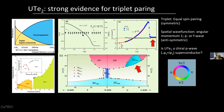Taking this data at face value and assuming the Knight shift is almost non-changing across T_c, combined with everything else, there's strong evidence for it being a triplet superconductor. The question now is what is the actual order parameter — the spatial part of the wave function — and is it a chiral superconductor in the sense that time reversal symmetry is broken? The Kerr effect seems to suggest that time reversal symmetry might be broken, but these are early days.